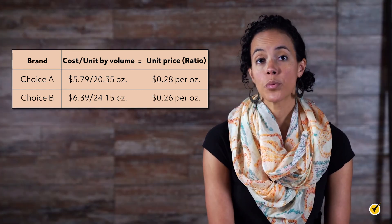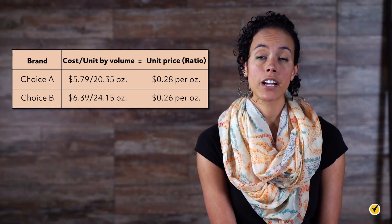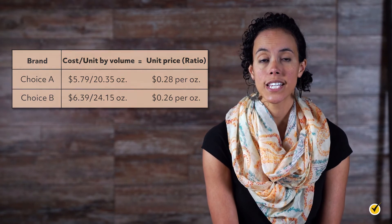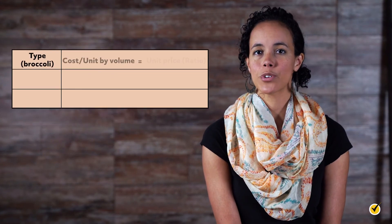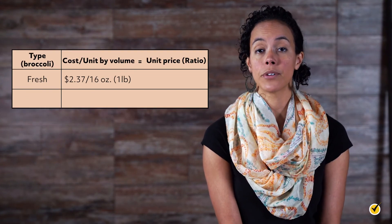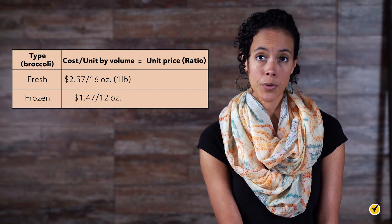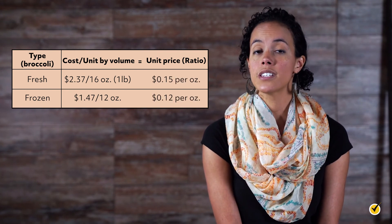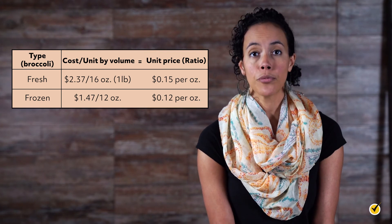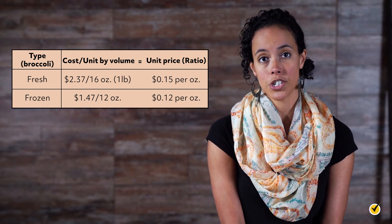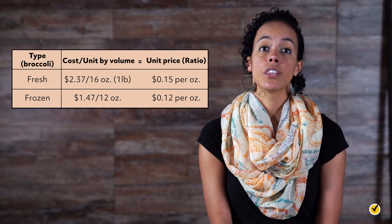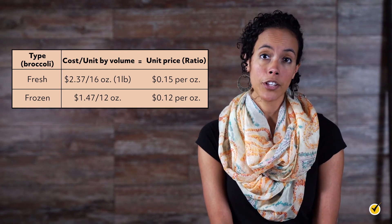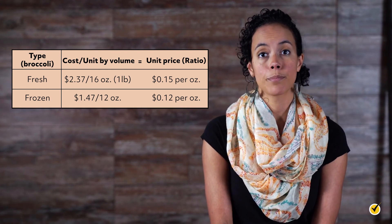This example was fairly straightforward because the volume of the cereal packages were both measured in ounces. Many times, a unit conversion must be made before a unit price can be determined. For example, if we're trying to compare the unit cost of a pound of fresh broccoli to a package of frozen broccoli measured in ounces, we would need to know that one pound is equal to 16 ounces before we could calculate the unit cost ratio. In this case, the frozen broccoli would be the better value based on the smaller unit price per ounce.